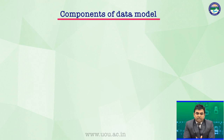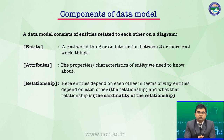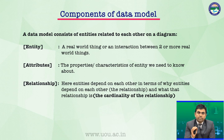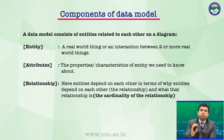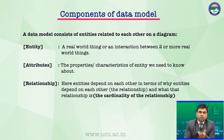Components of data model — data model बनाने से पहले हमें मालूम होना चाहिए कि उसके कुछ basic components हैं. A data model consists of entities related to each other on a diagram. तीन होते हैं — एक entity, एक attributes, एक relationship. Entity: a real world thing, or an interaction between two or more real world things. Entity का मतलब है किसी चीज़ को identify करने के लिए उसका नाम — real world से match करती, जिसे हम नाम से identify कर सकते हैं, that is an entity. Attribute is just like a property or a characteristic of any entity. जो entity हमने define करी है, उसके अपने कुछ attributes होंगे, उसके characteristics होंगे, वो हमें वहाँ पर बताने पड़ते हैं.